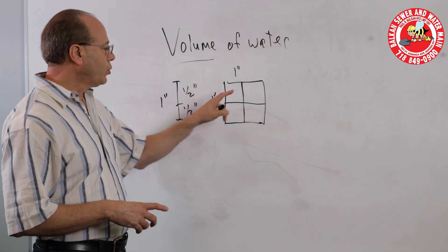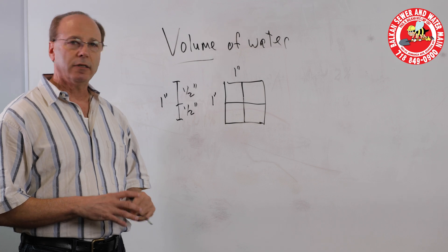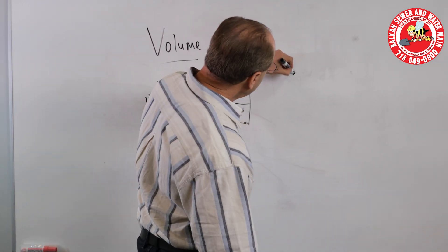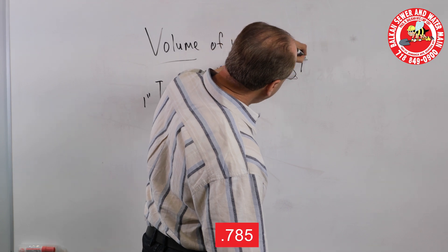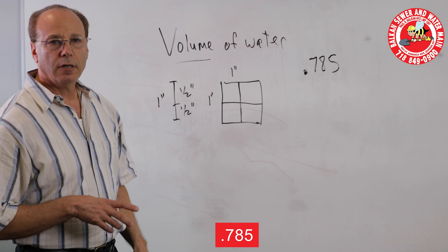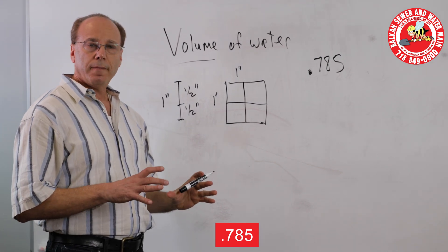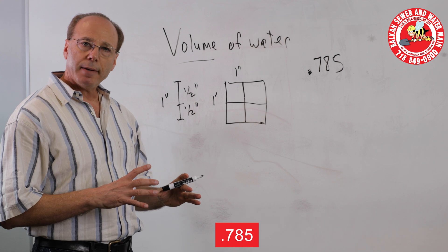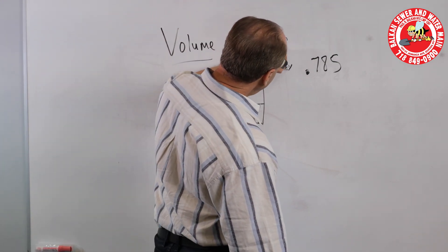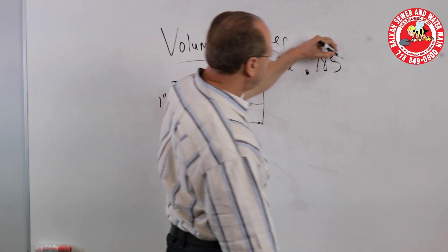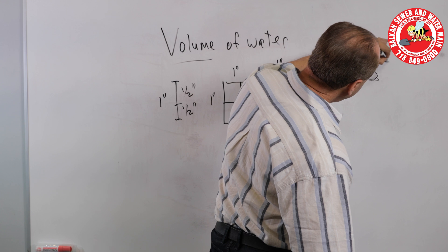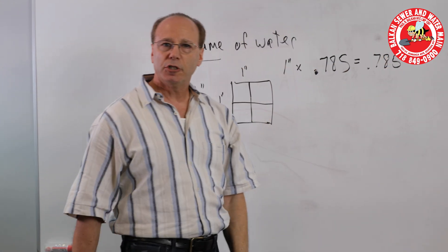Now, of course, I'm drawing squares, pipes are round, and here's another number to keep in mind. The number is 0.785. That magic number will tell you the volume that's inside a round pipe. So if you have a one inch pipe and you times it by 0.785, that's the area inside a one inch pipe.